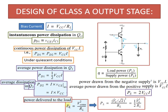The power delivered to the load PL is equal to Vout RMS squared divided by RL. Vout RMS corresponds to the peak value Vout(peak) divided by root 2, and since it is squared, this gives half of Vout(peak) squared divided by RL. The values of PS and PL are then substituted into the efficiency equation to obtain the efficiency value.